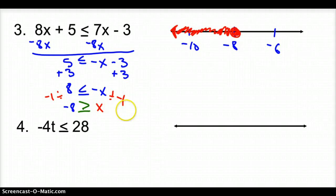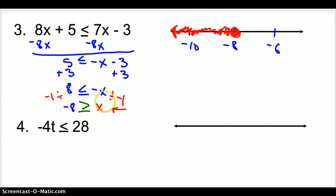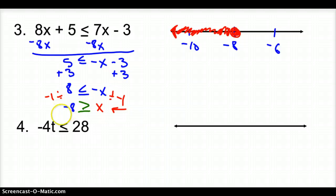Another way to look at it: since the variable is on the right side, we cannot follow the arrow. If the variable is on the left side, then we can follow the arrow, which you'll see in number 4.